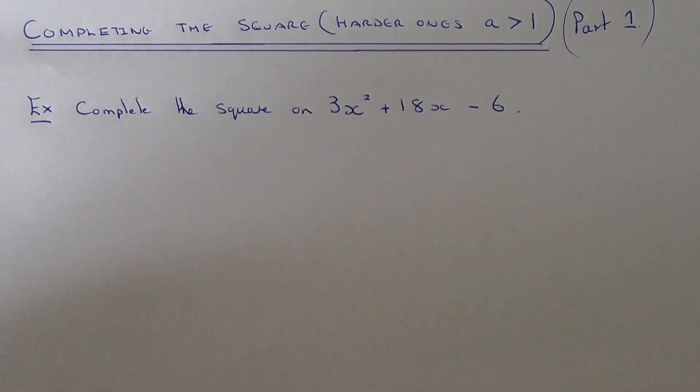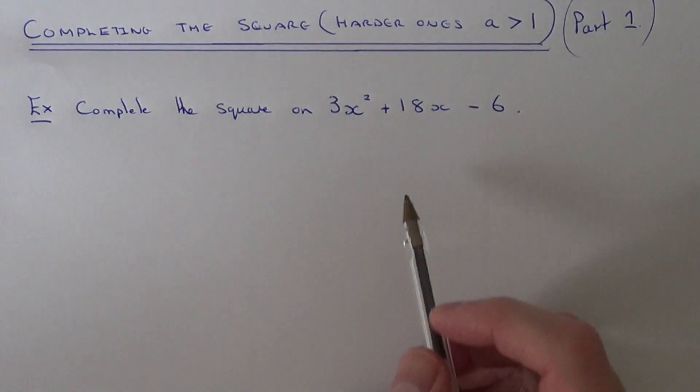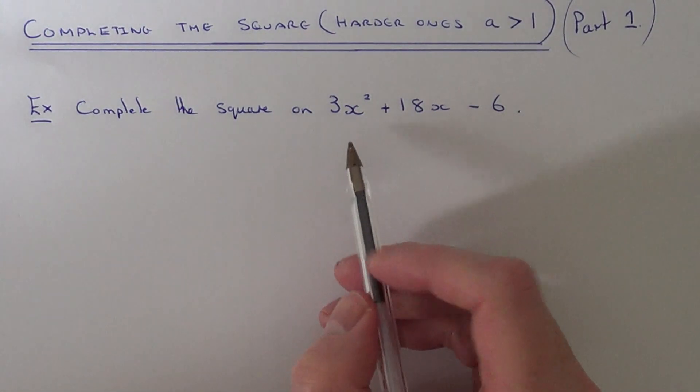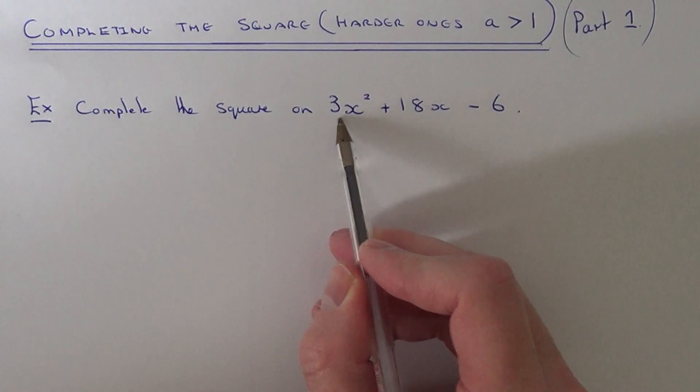Hi, today I'm going to show you how to complete the square on harder quadratics. These quadratics basically have a number before x squared, so the value of a is more than one.